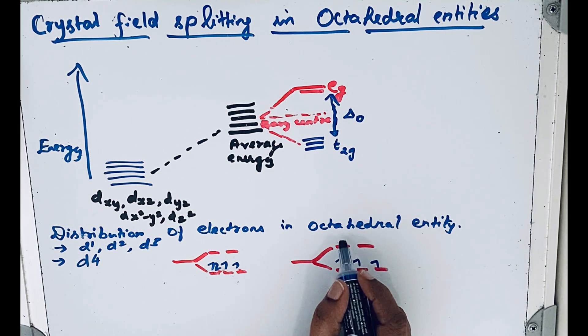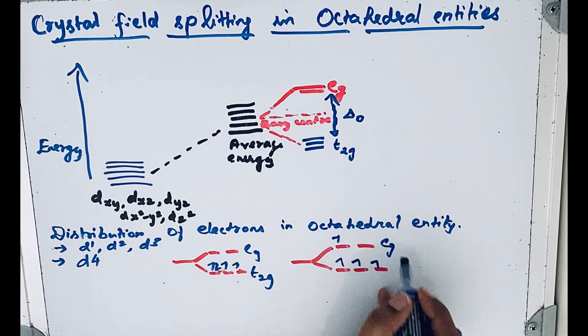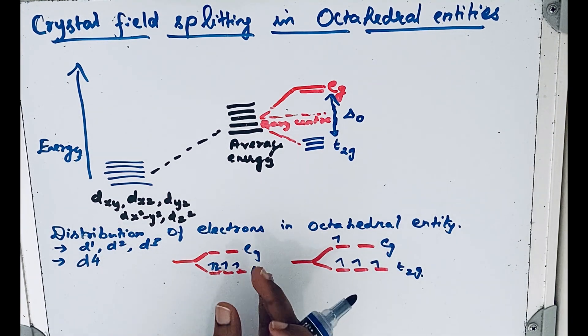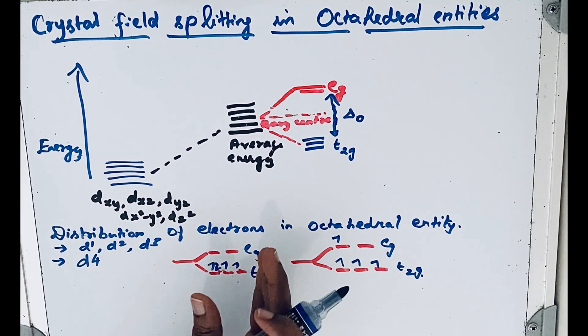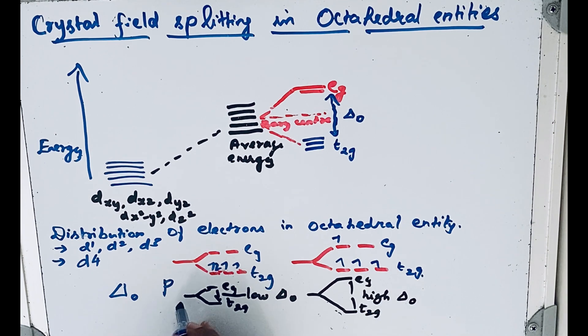These possibilities depend on delta-o and pairing energy. If delta-o is less than pairing energy, then higher energy is needed for pairing. In such cases, it will follow t2g³ eg¹ configuration.